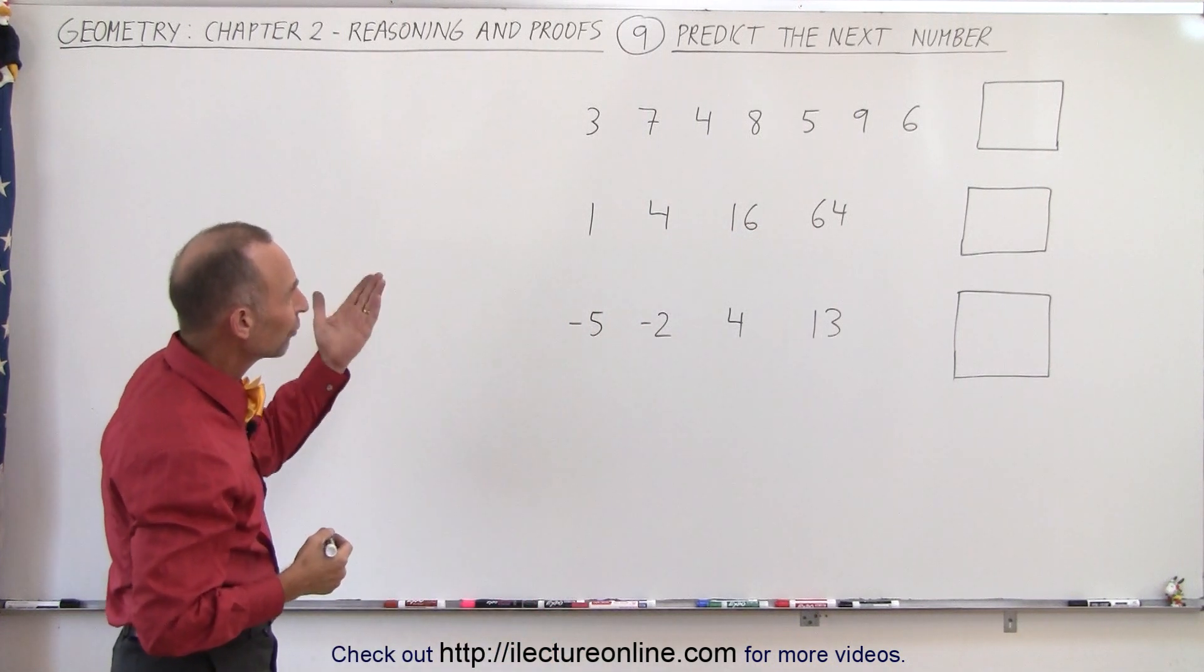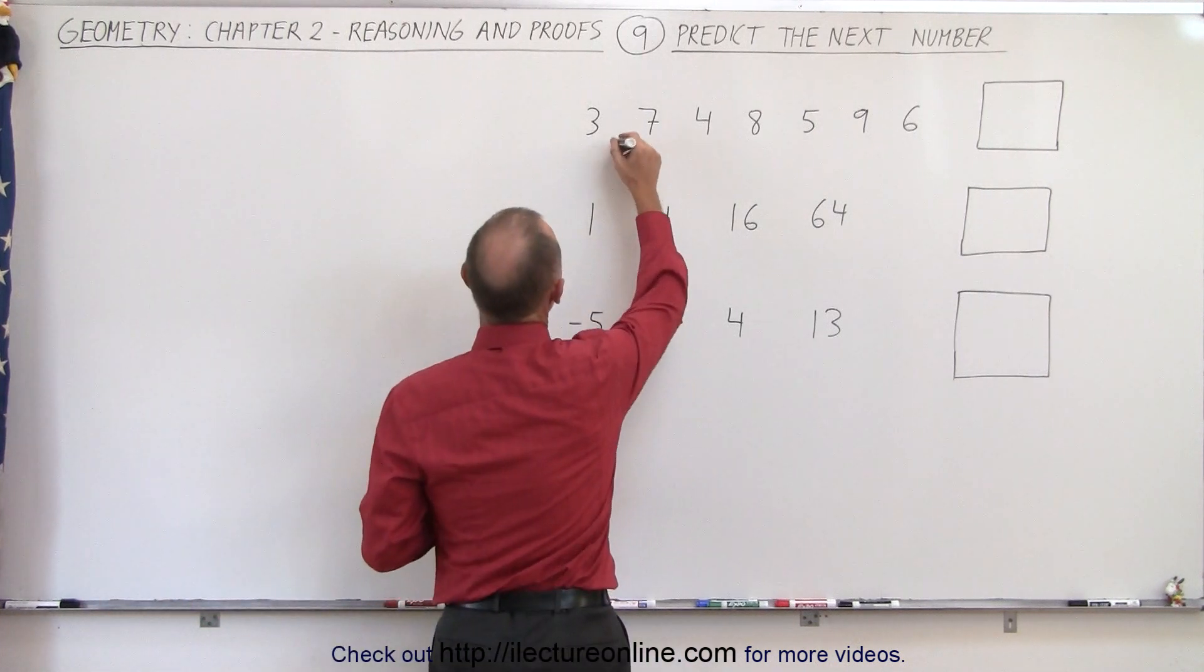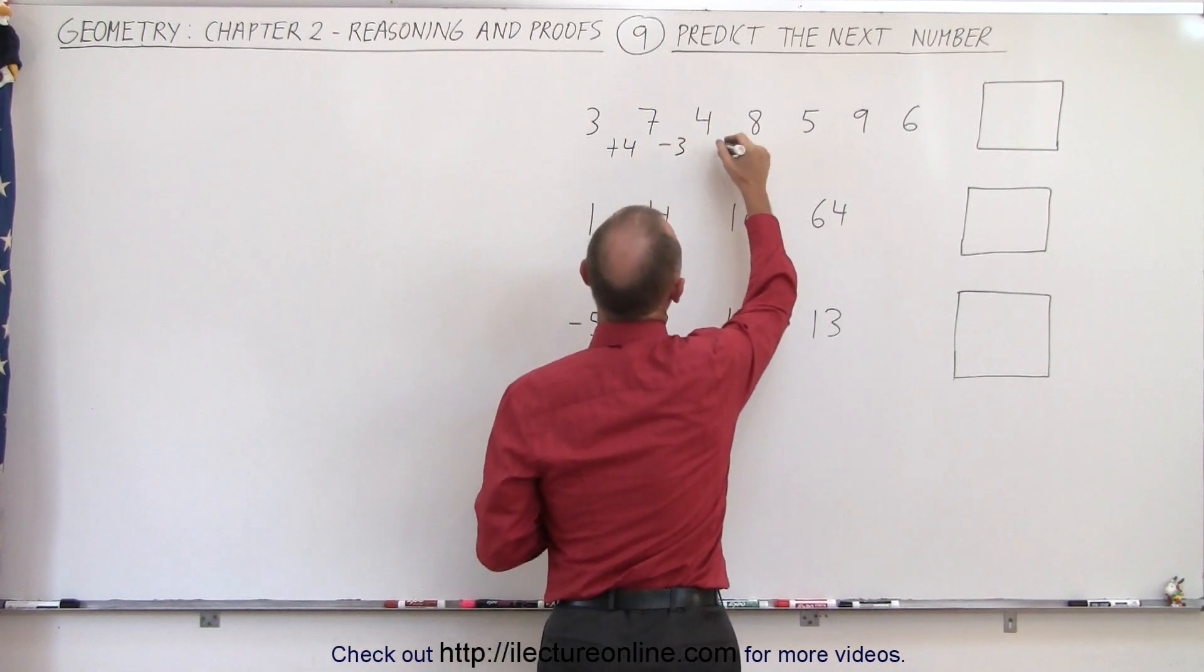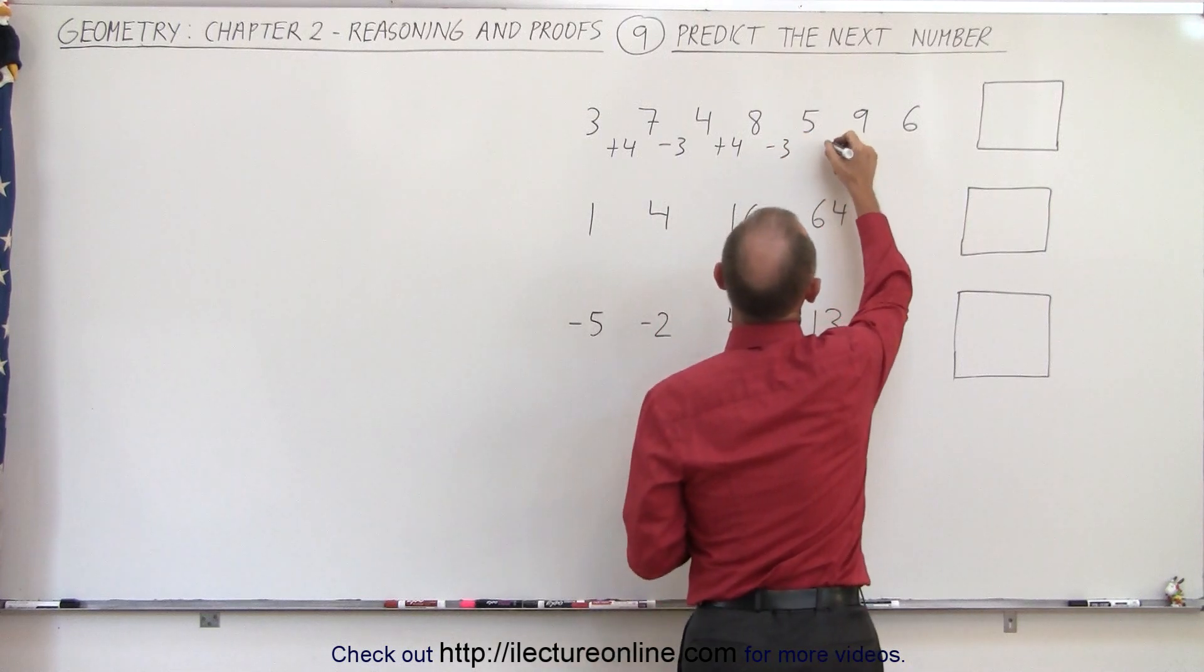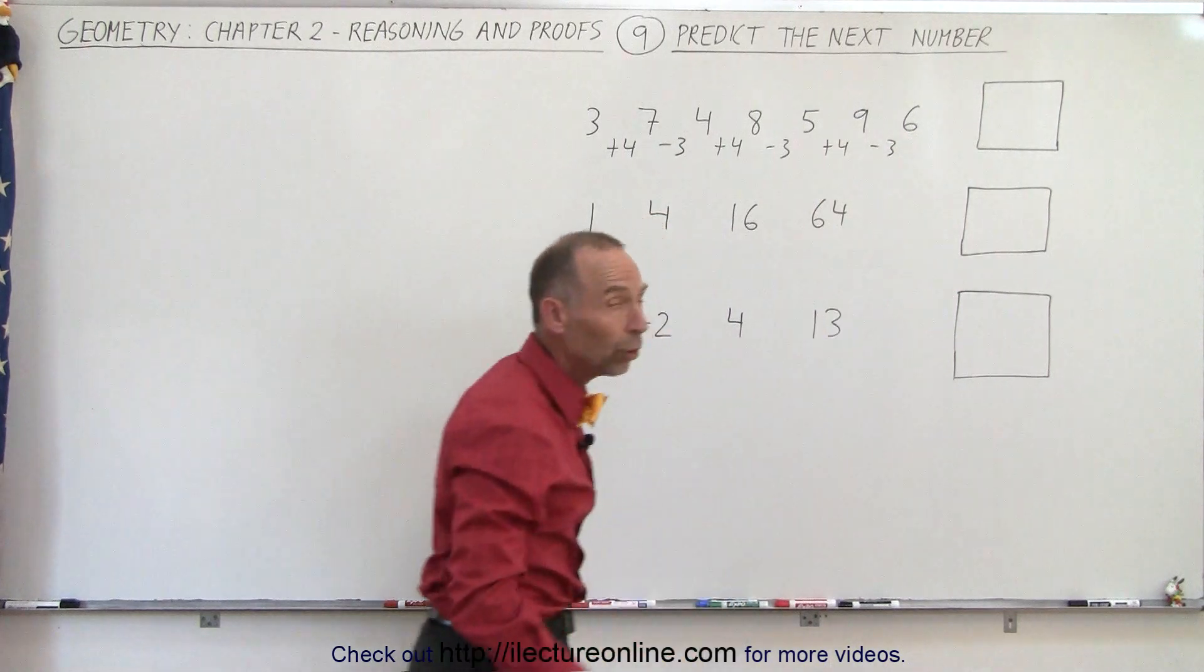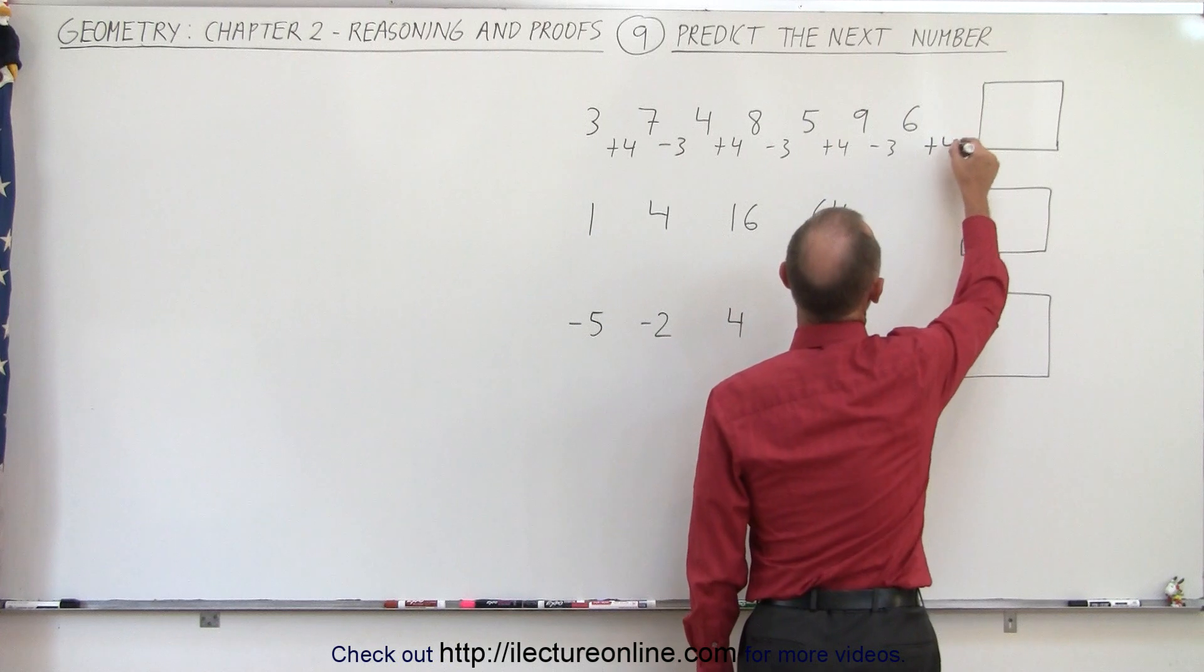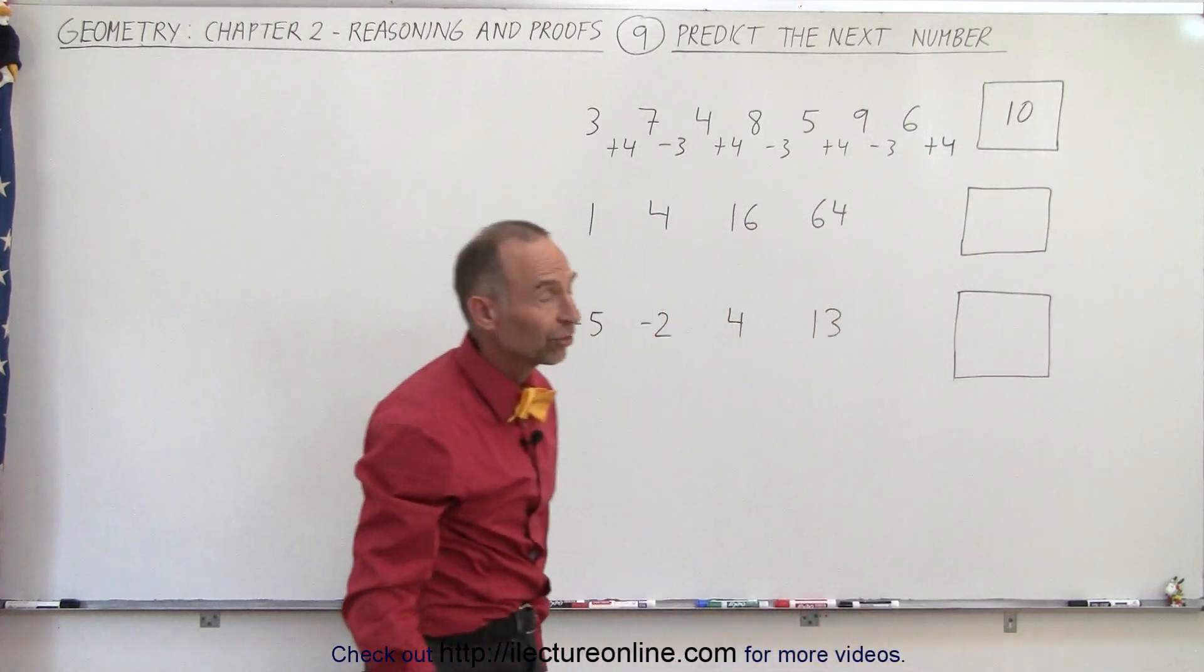So here what I would do on the first one is say well how much does the number increase. So here I add 4 and then from there to there I subtract 3. Then I add 4 and then I subtract 3. Then I add 4 and then I subtract 3. And it looks like that pattern holds and because of that I can think of the next one. I think I have to add 4 again and 4 plus 6 gives me 10. That's probably the next number.